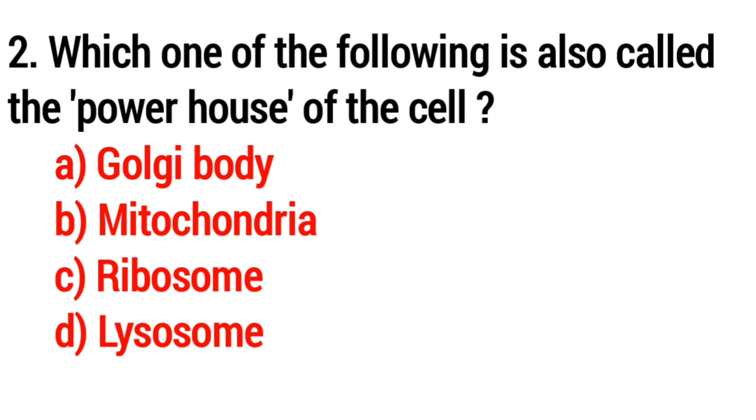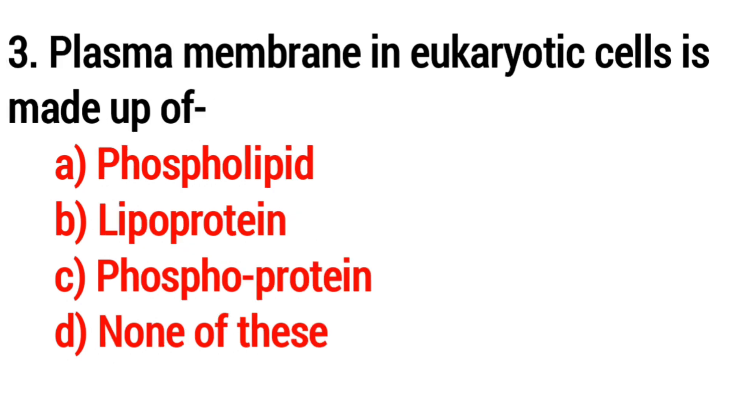Question number 2: Which one of the following is also called the powerhouse of the cell? The answer is Option B: mitochondria. Question number 3: Plasma membrane in eukaryotic cells is made up of? The answer is Option A: phospholipid.